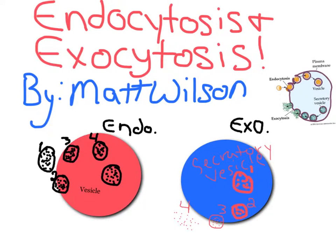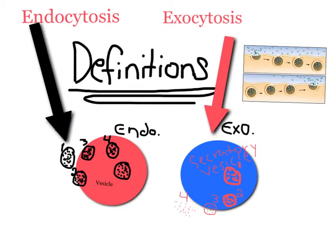Join me on my journey of endo and exocytosis. Endocytosis is an energy-using process by which cells absorb molecules by engulfing them. Exocytosis is a process in which intracellular vesicles move towards the plasma membrane and out.